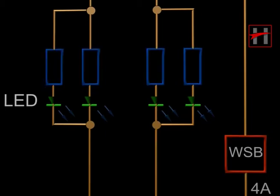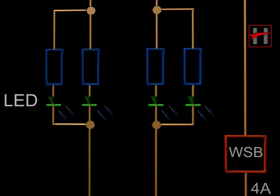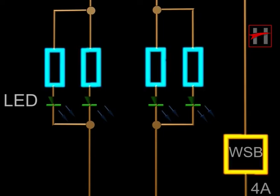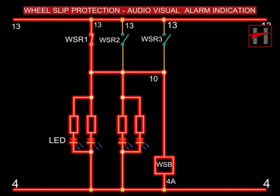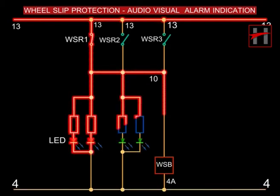Wheel slip is indicated in the driver's cabin by the glowing of the wheel slip LED indication on the indication panel and the ringing of the wheel slip buzzer. In case of LED indication, the current in cable number 13 flows through the interlocks of the concerned WSR, LED, and completes its path with cable number 4.